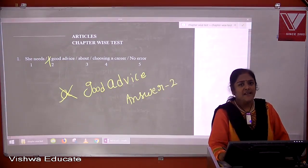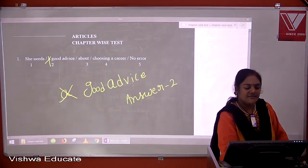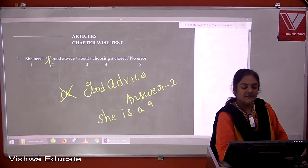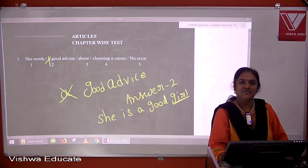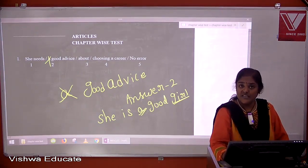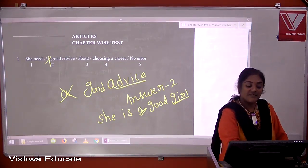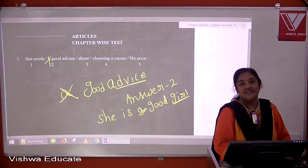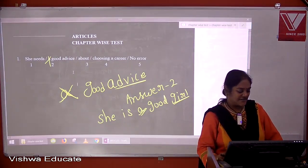The answer is two. Let me clarify: you might say 'she is a good girl' — and you're right, because 'girl' is a countable noun, so we can take an article since we're talking about a singular noun. But here 'advice' is uncountable, so we delete the article. Answer is two.